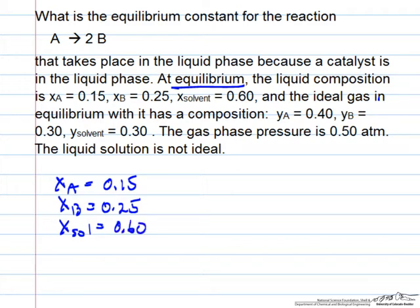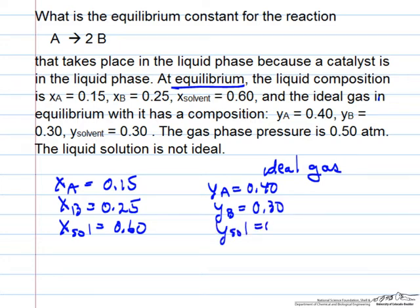At equilibrium with the liquid is a gas, and it tells us it's an ideal gas. The mole fraction of the gas: 0.4 for A, 0.3 for B, and for the solvent also 0.3. And the pressure in the gas phase is half an atmosphere.